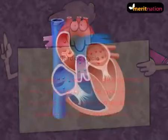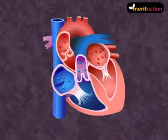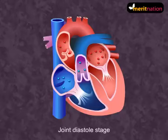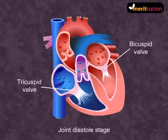Look at this figure. In this you can make out that all four chambers of the heart are in a relaxed stage, i.e., joint diastole stage. You will observe here that the bicuspid and the tricuspid valves are open.